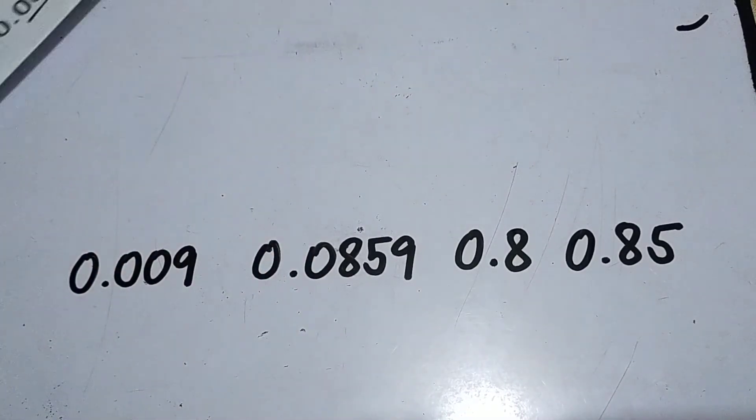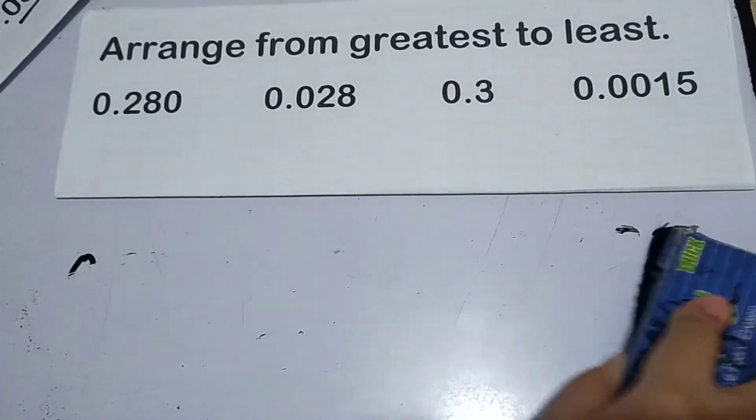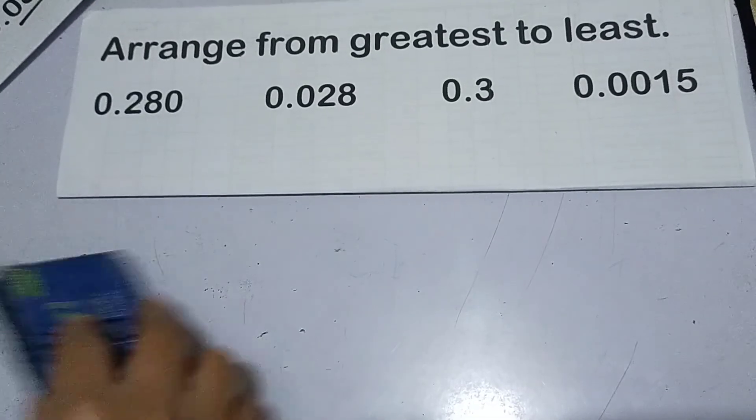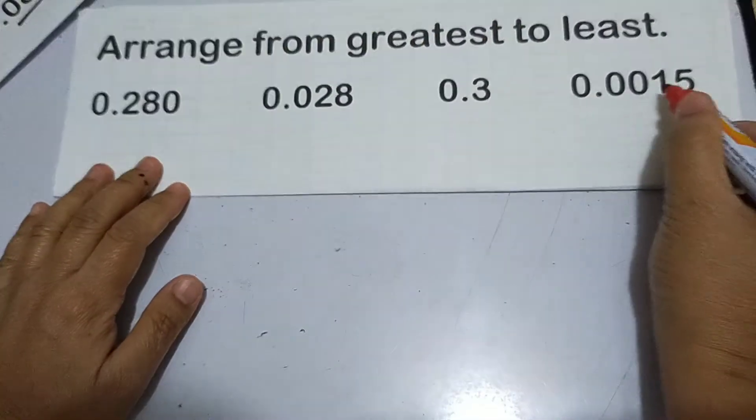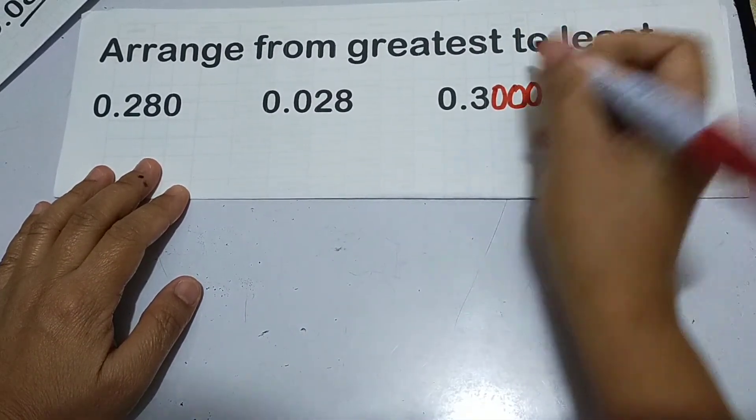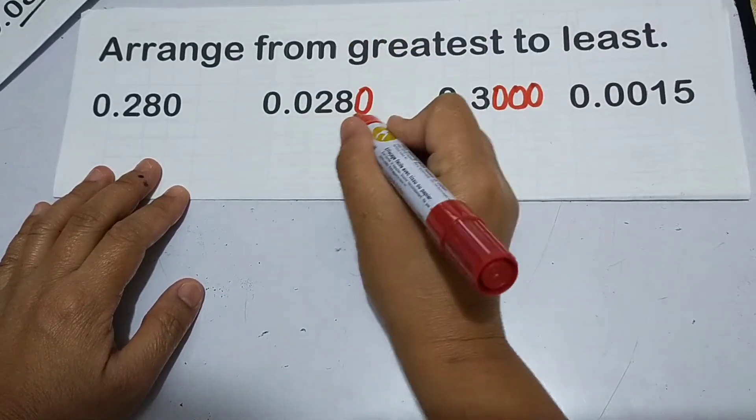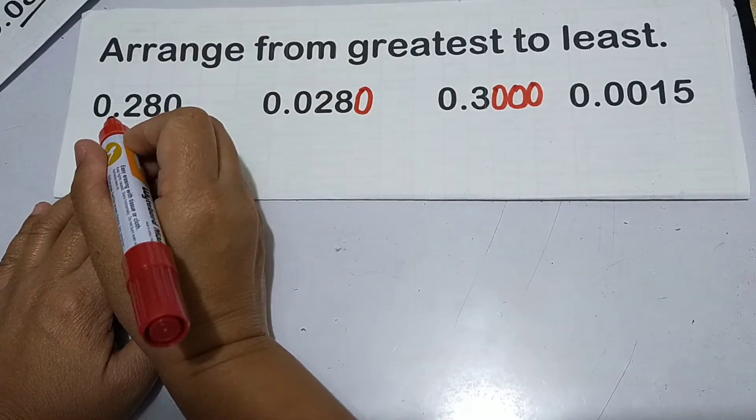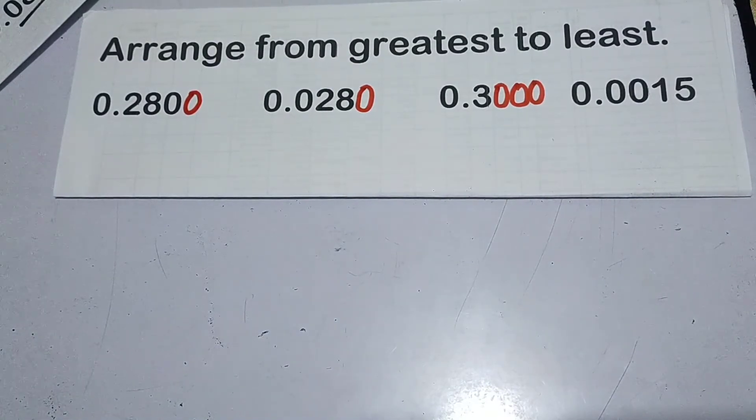Paano naman yung greatest to least? Pag greatest to least naman, ganun din yung procedure. Kailangan, pagpaparehasin nyo yung dami ng digits. Apat yung may pinakamaraming digits. Eto gagawin mo rin apat. Yung 3 tenths, magiging 3 thousand ten thousandths. Eto naman, magiging 280 ten thousandths. And then eto, magiging 2 thousand 800 ten thousandths. So madali na siya ayos from greatest to least.